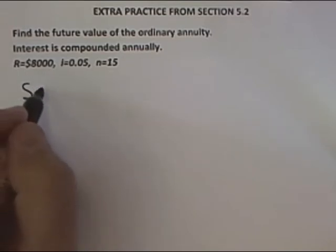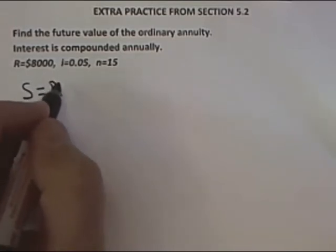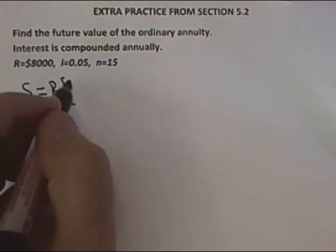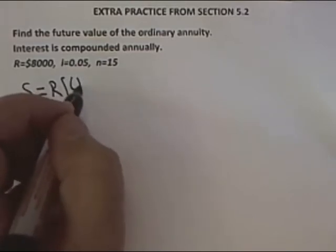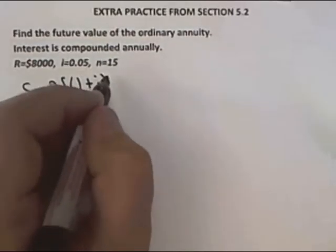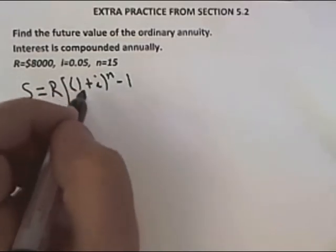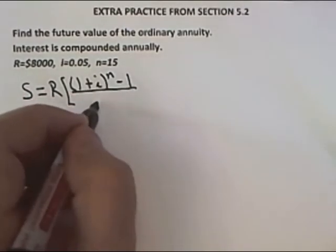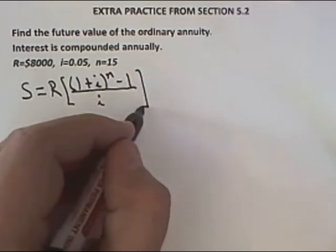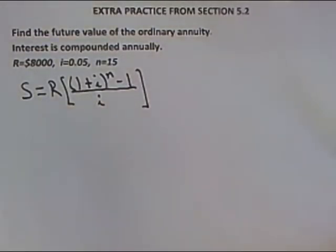Basically, we have to know what the formula is for the future value of an ordinary annuity, write it down, use the given values, do the calculation, and you're done. Here's the formula for the future value of an ordinary annuity.